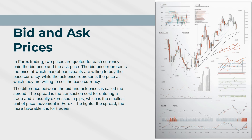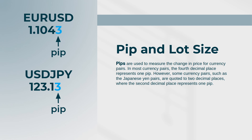Bid and ask prices: in forex trading, two prices are quoted for each currency pair — the bid price and the ask price. The bid price represents the price at which market participants are willing to buy the base currency, while the ask price represents the price at which they are willing to sell the base currency. The difference between the bid and ask prices is called the spread. The spread is the transaction cost for entering a trade and is usually expressed in pips, which is the smallest unit of price movement in forex. The tighter the spread, the more favorable it is for traders.